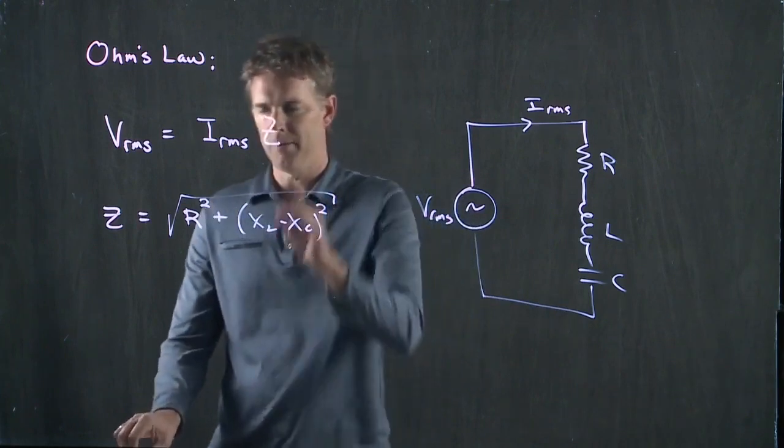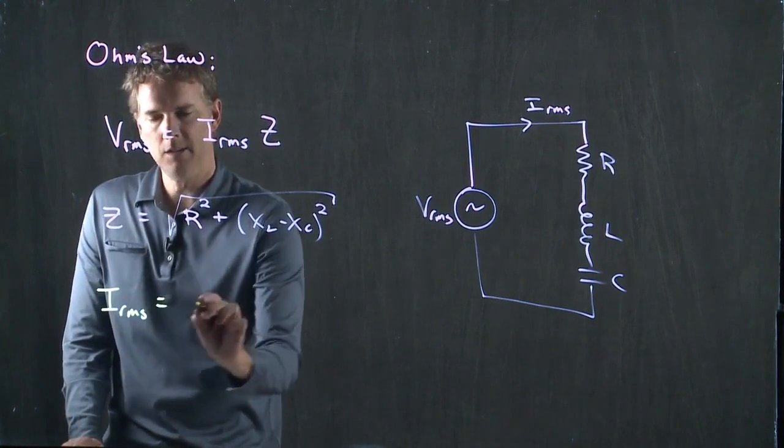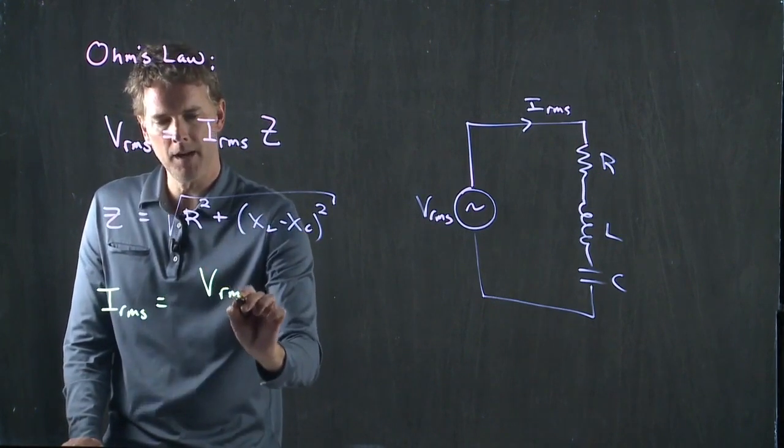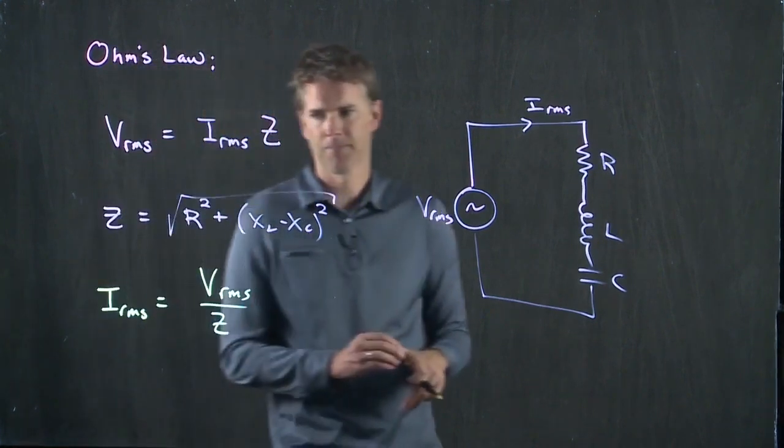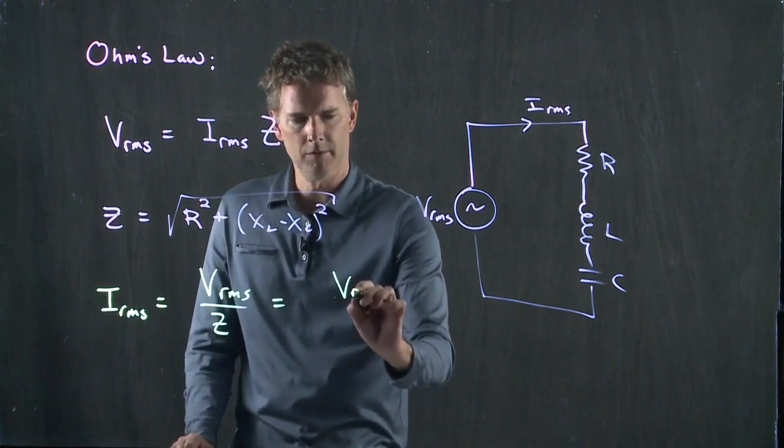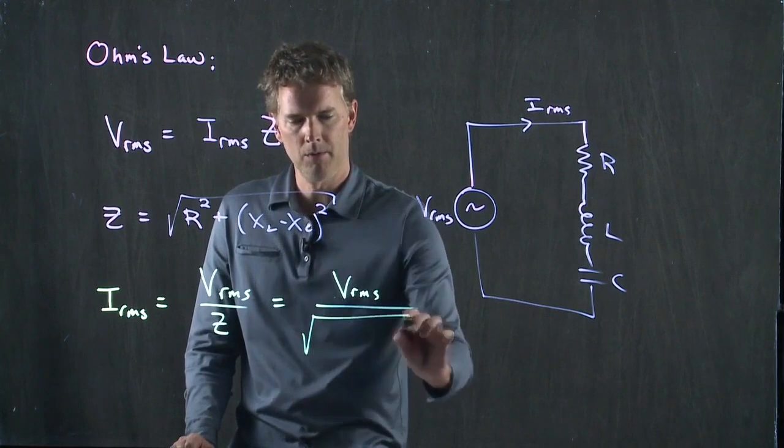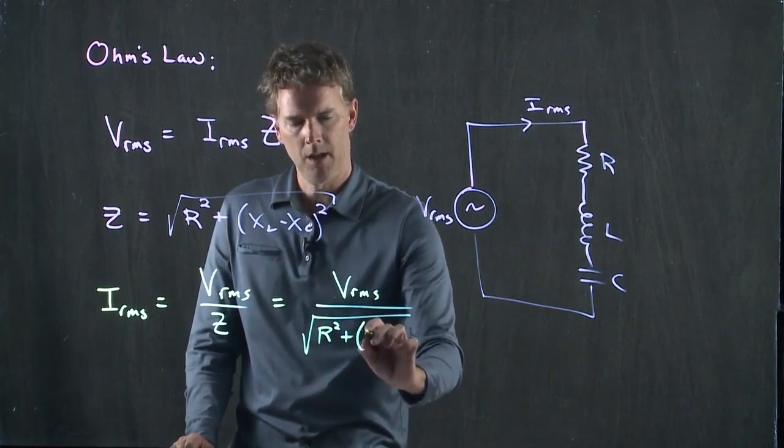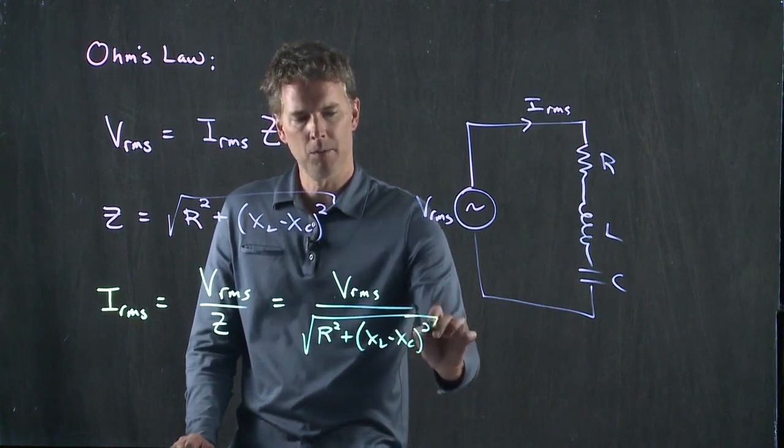Well we have it right here. IRMS is just going to be VRMS divided by Z. But we know what Z is, so this is VRMS divided by the square root of R squared plus XL minus XC quantity squared.